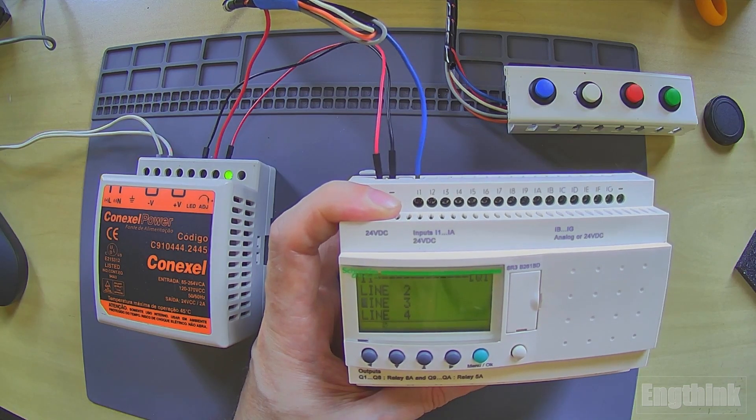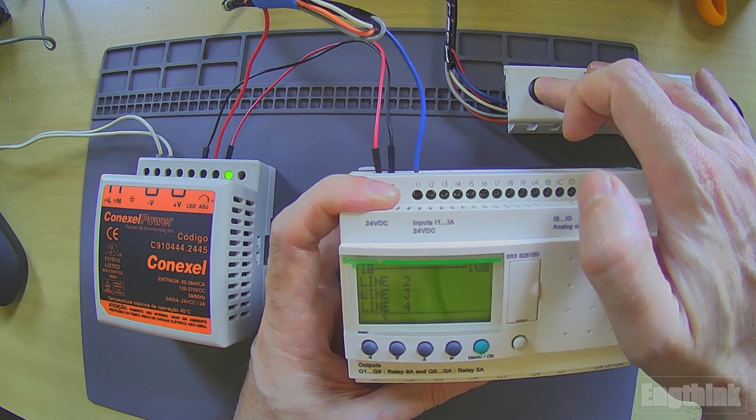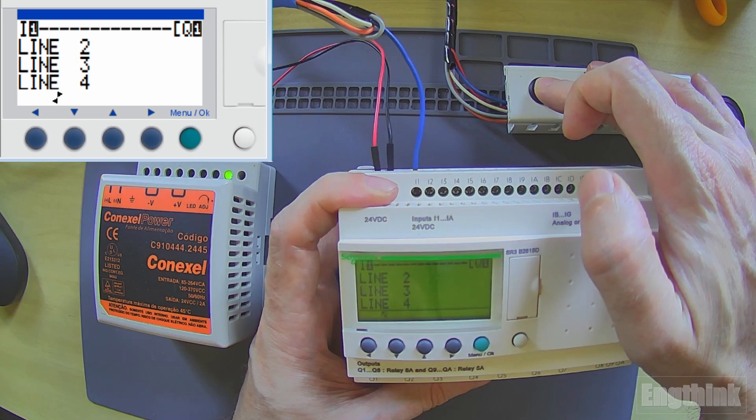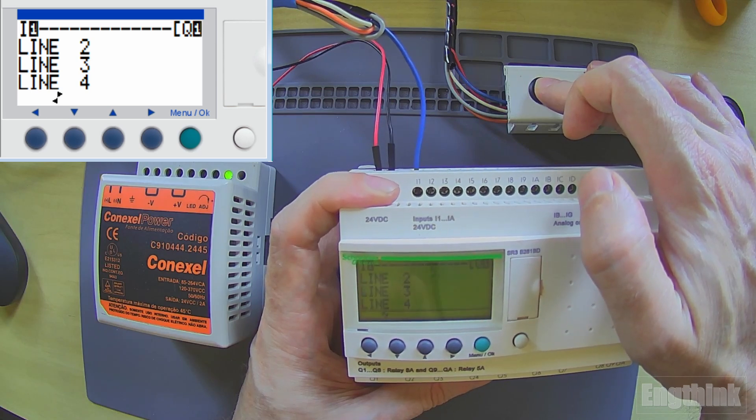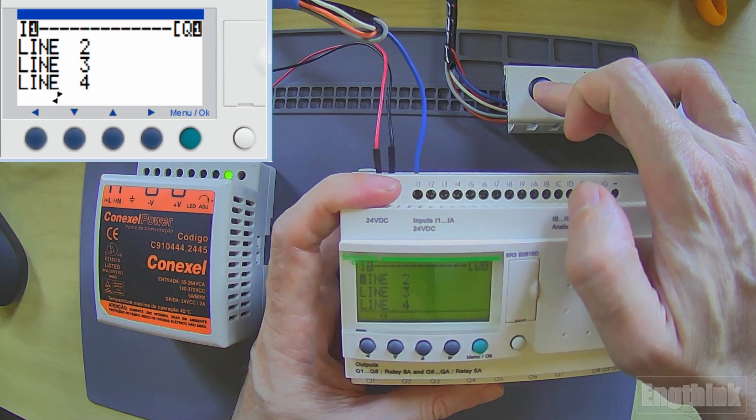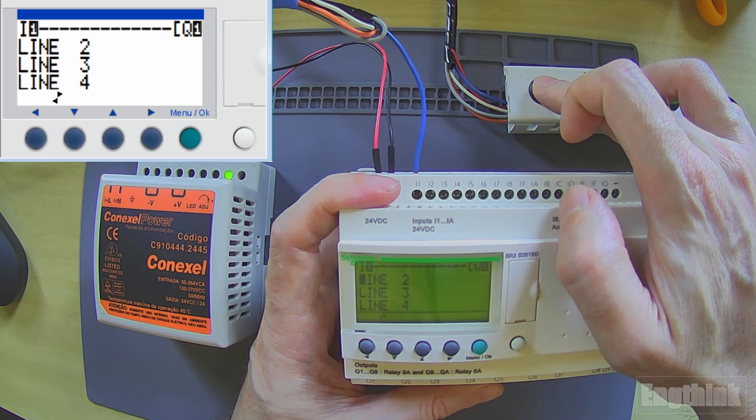First of all, let's see how it's working right now. Let's press the button. As you can see, we have this modification in the I1 with reverse video, as per the manual, and then we have Q1 as well activated.